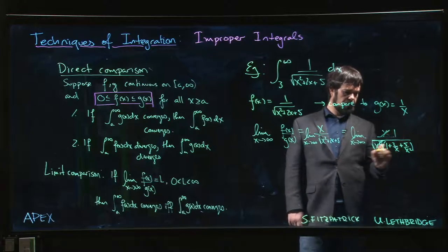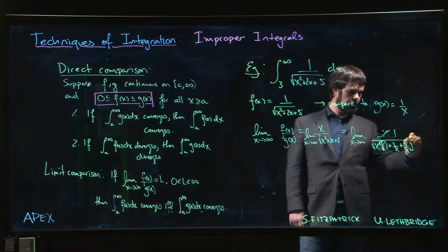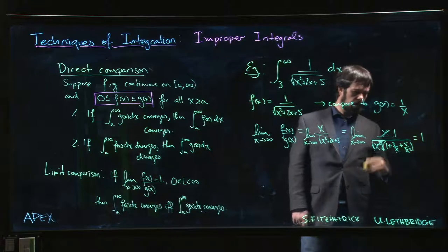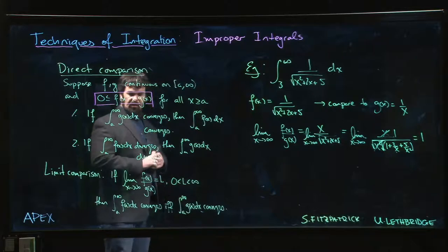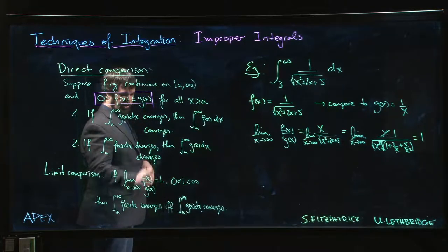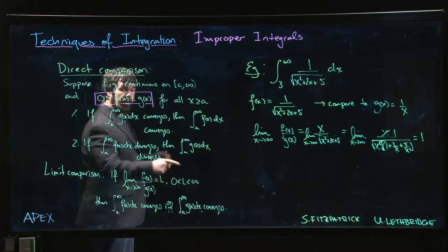So I get 1 over 1, I get a limit of 1. In exactly this scenario, I can take the limit of f over g, I get a limit of 1. 1 is certainly between 0 and infinity, and now I can say that since the integral from 3 to infinity of 1 over X diverges...